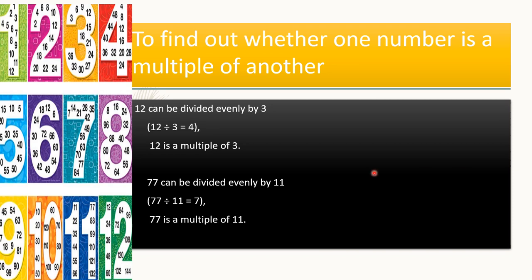A few more examples: you have to divide the number. So 12 divided by 3 — I am getting remainder as 0 and quotient as 4. So I can say that 12 is a multiple of 3 as well as 4. In this example also, 77 divided by 11: I am getting remainder as 0, and I can say that 77 is a multiple of 11 as well as 7.